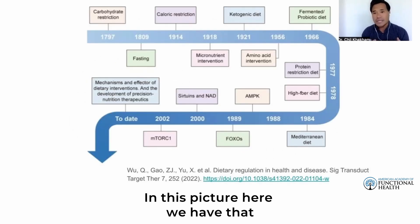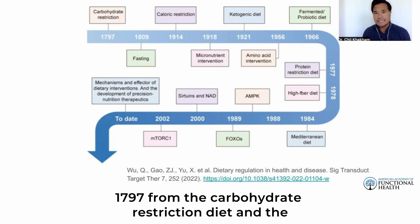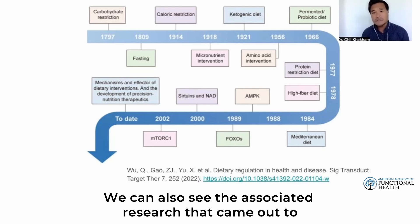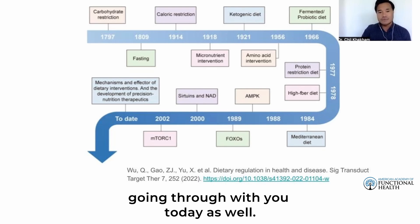In this picture we can see the introduction of different types of diets since 1797, from the carbohydrate restriction diet and the promotion of the Mediterranean diet in 1984. We can also see the associated research that came out to investigate the dietary mechanisms, which we will be going through today as well.